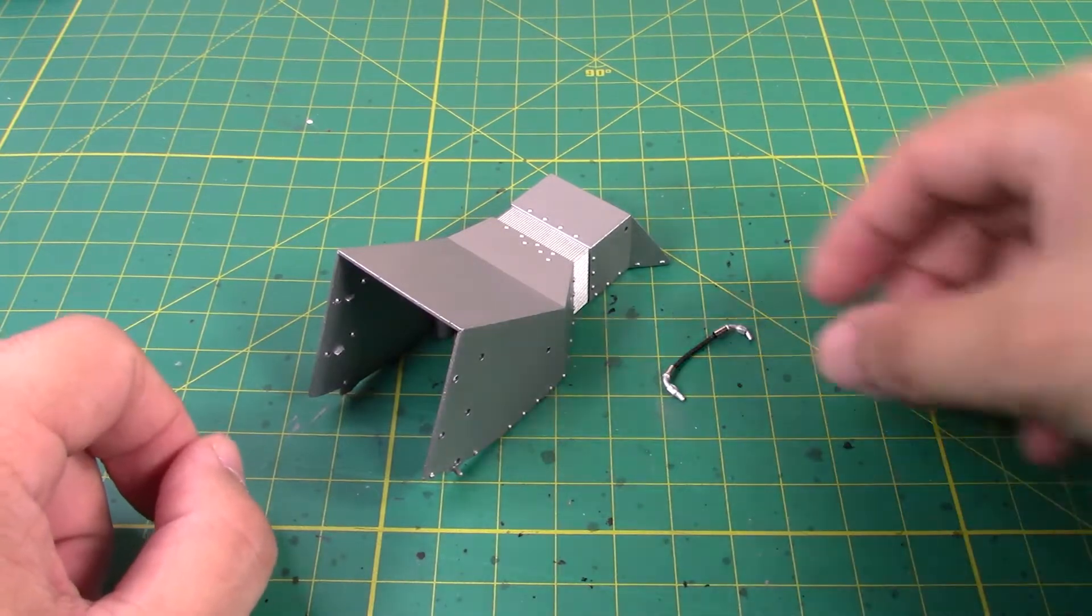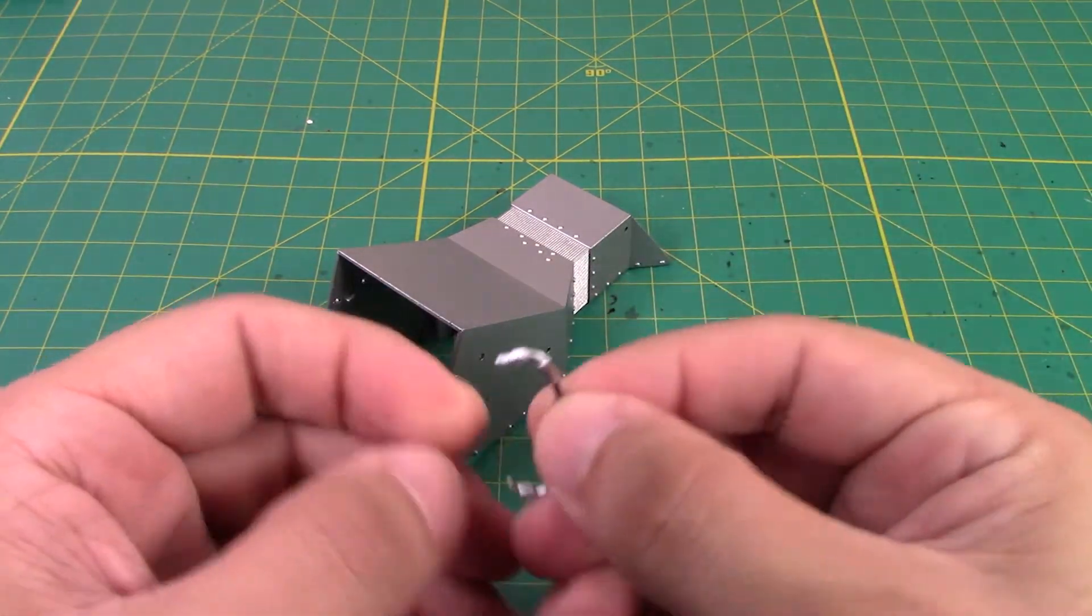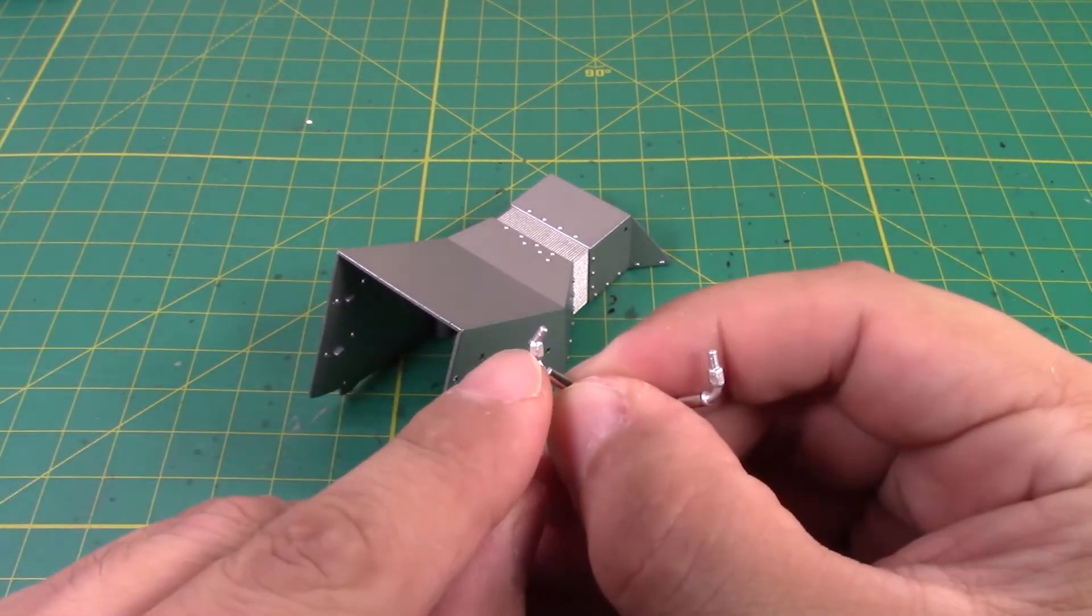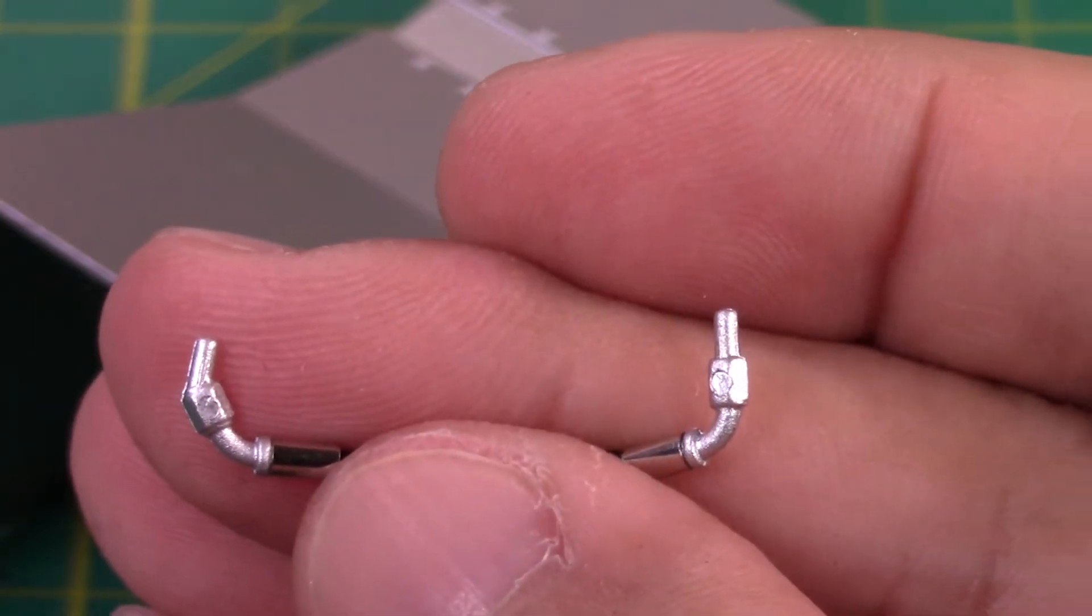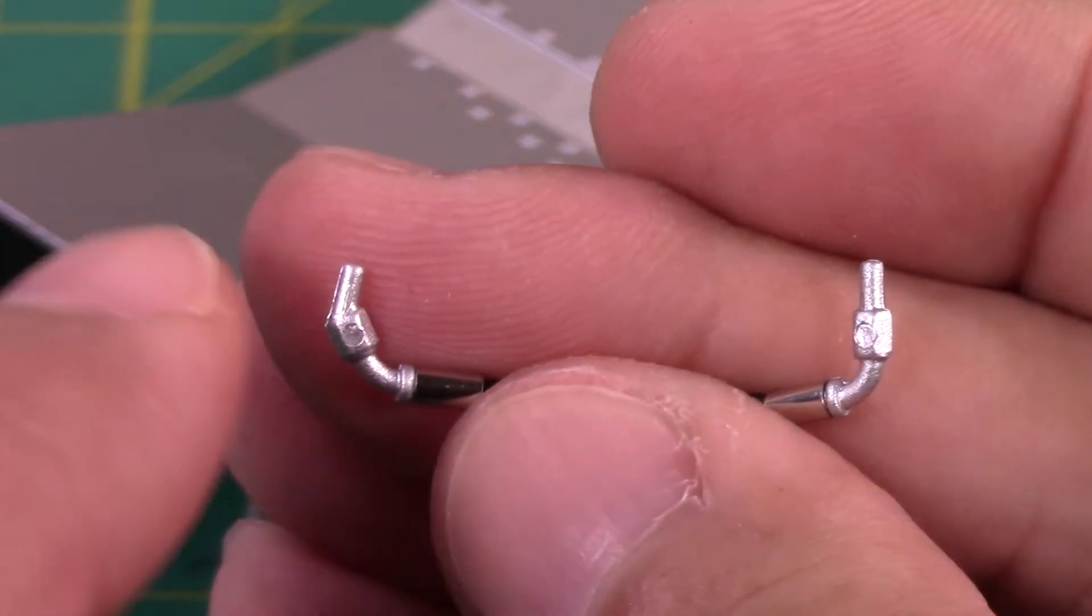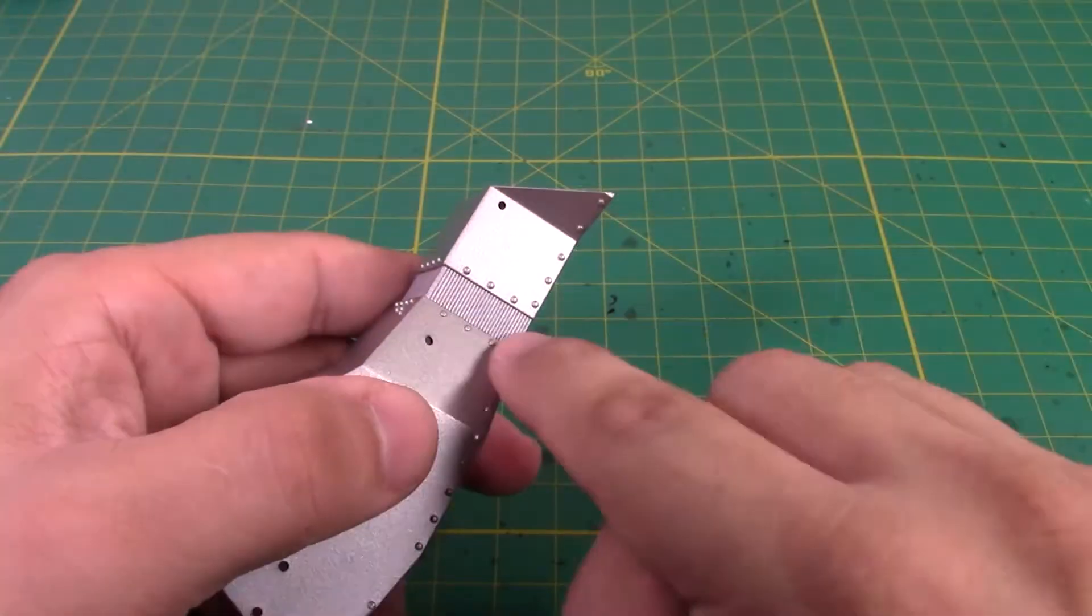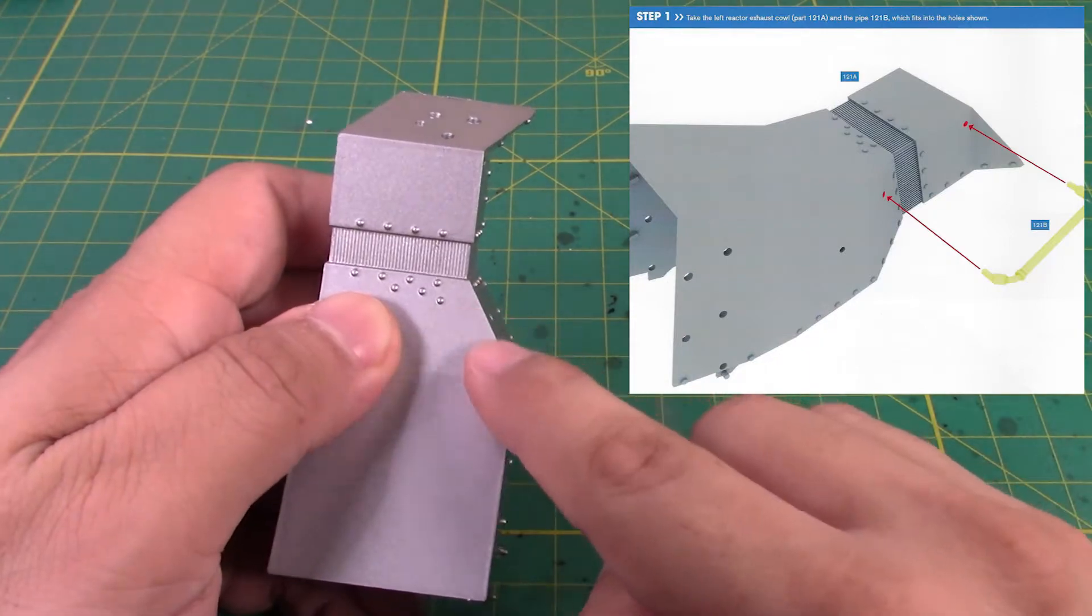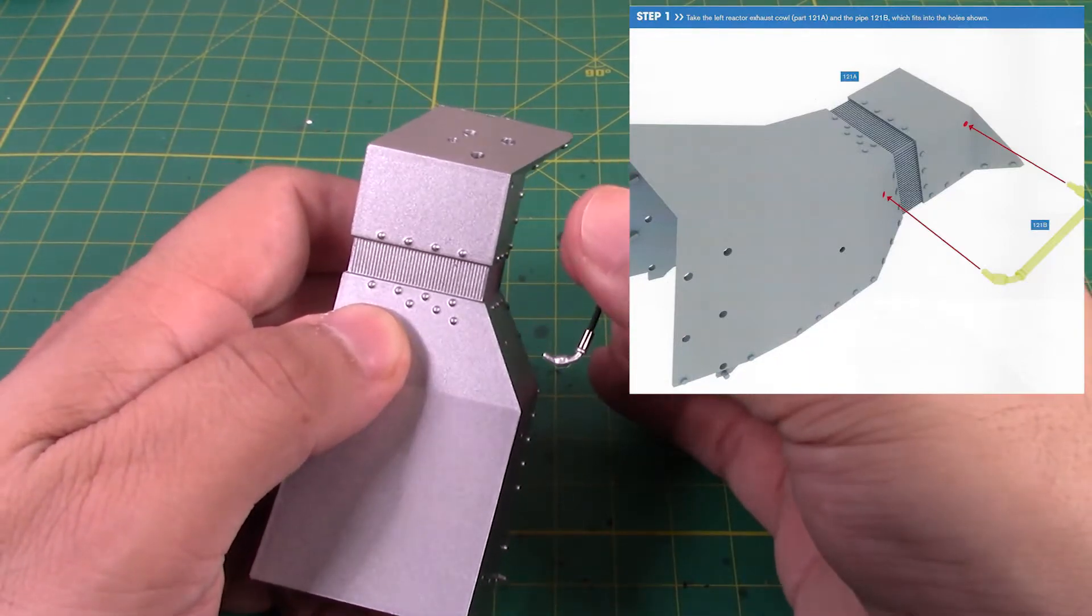So all we're going to do is take our pipe here. And there's one side that's at an angle, which is this section here. And here's a better view of the pipe. It's number 121B. You can see that this peg here is straight and this one's at an angle. And it's going to go onto these two holes here. So this hole that's at an angle will have the corresponding peg.